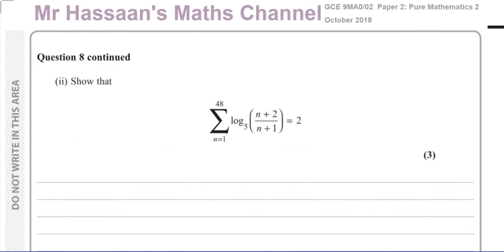So that's 8, part 1. And part 2, it says, now here, this is a weird one. It's got logarithms mixed with sigma notation. It says, show that the sum of all the terms you get when you substitute 1 into this expression, and then 2, and then 3, and then 4, and then 5, all the way up to 48, and you add them all together, you end up with 2. That's what it's basically telling you to do.